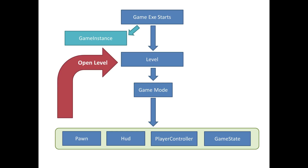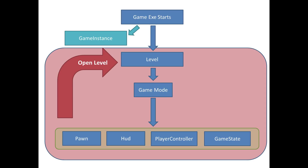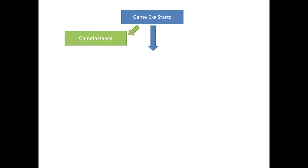You can probably see that at any point in this cycle, whenever something calls open level, all of this stuff is essentially transient — all of it can be changed because you're calling a new level. So how do you store data that persists between levels? That's where we come back to the game instance. The game instance is constantly there, and we can store data in it, which is going to be important for getting the menu flow right.